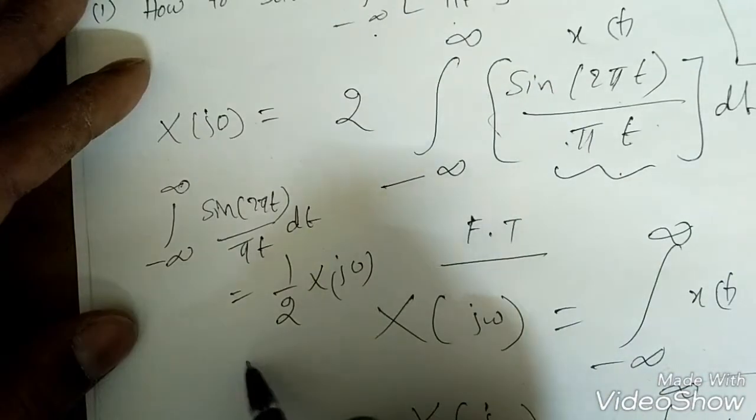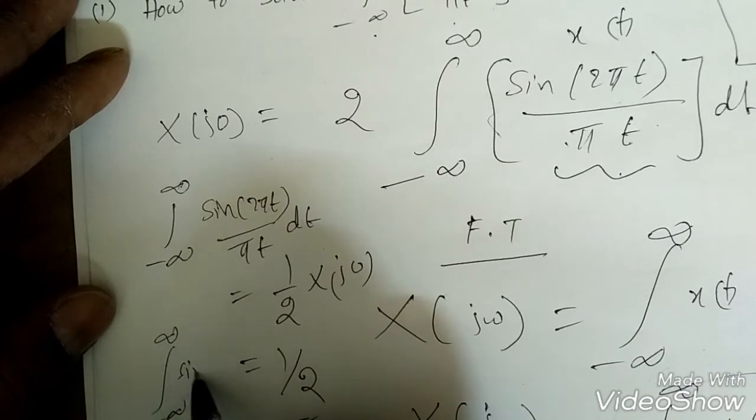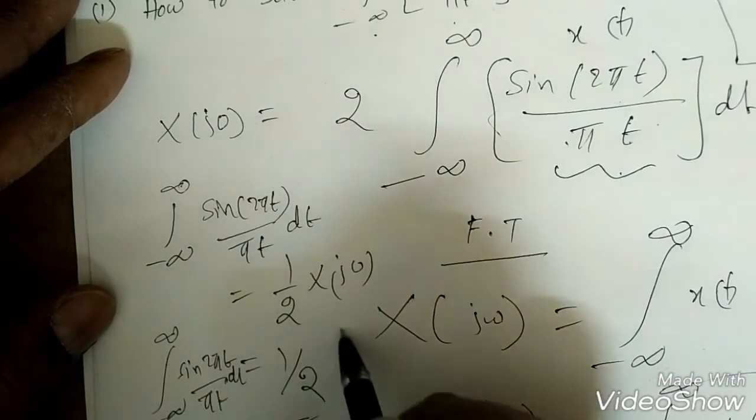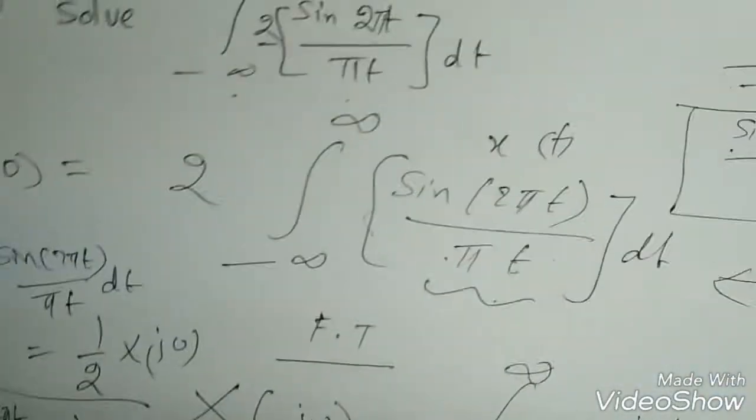x of j0 we got 1, so the area or we can say integration of this function sine 2πt by πt dt is nothing but half. So this is how to solve this type of problems.